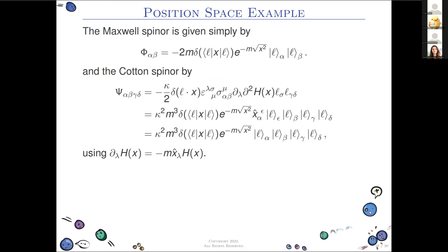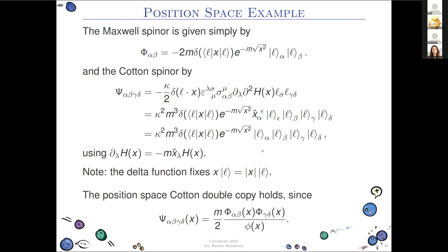This clearly double copies: the gauge curvature has m-squared, the Cotton tensor has m-cubed, so you multiply by m and divide by two, giving exactly the position-space version of the Cotton double copy we derived in momentum space — confirming the double copy structure in both representations.